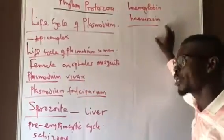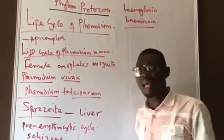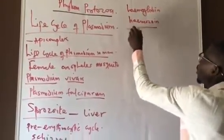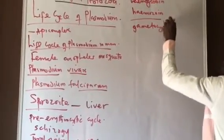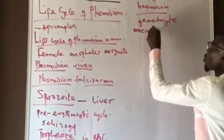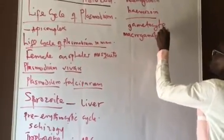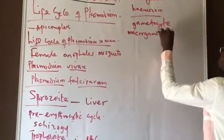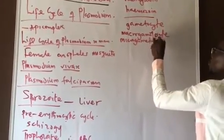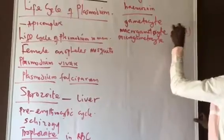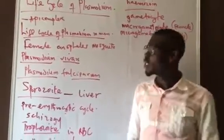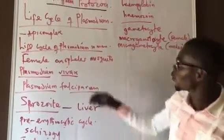After this, the merozoites or metacryptozoites divide to give rise to gametocytes, still in the red blood cells. We have the macrogametocyte, which is the female gametocyte, and the microgametocyte, which is the male gametocyte. All these are present in the red blood cells, and that is the end of the life cycle in man.